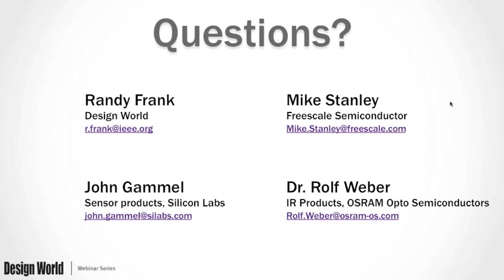Rolf, on what tools are needed to reprogram the demo: the microcontroller on the demo is a Microchip part, so you need a Microchip programming tool costing roughly $150. You can get the C code from OSRAM, and you're ready to go — it's low cost, and changing the C code allows you to make the demo do other things.